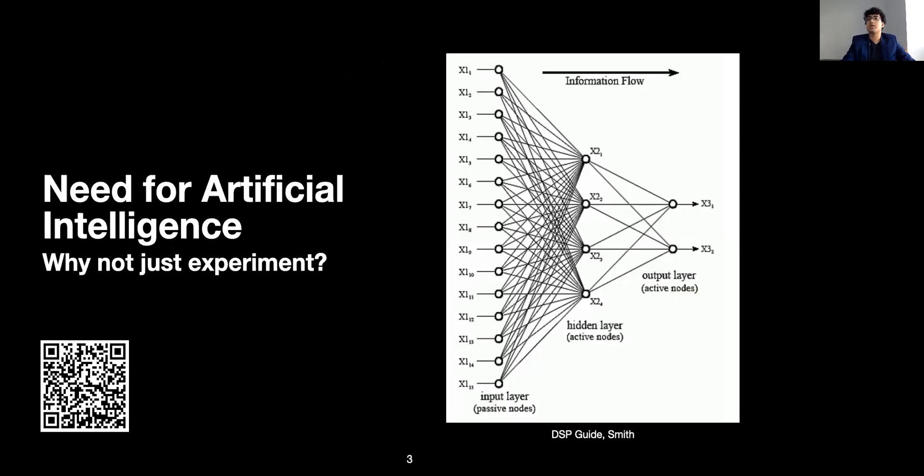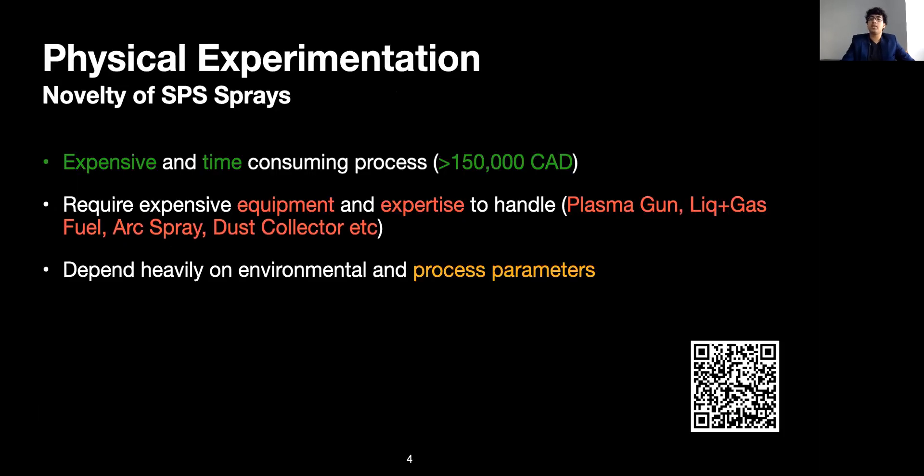The question now arises, the need for artificial intelligence. Why not just experiment? The answer is experimentation is expensive and time-consuming. You require extensive equipment and expertise to handle. And finally, results are heavily dependent on environmental factors and process parameters.